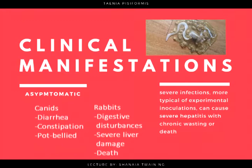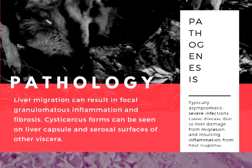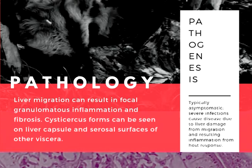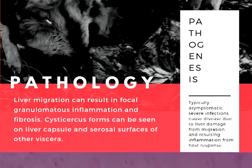Severe infections, more typical of experimental inoculations, can cause severe hepatitis with chronic wasting or death. The pathology of T. pisiformis includes liver migration which can result in focal granulomatous inflammation and fibrosis. Cysticercosis forms can be seen on the liver capsule and serosal surfaces of other viscera. Its pathogenesis is typically asymptomatic, though severe infections cause disease due to liver damage from migration and result in inflammation from the host response.